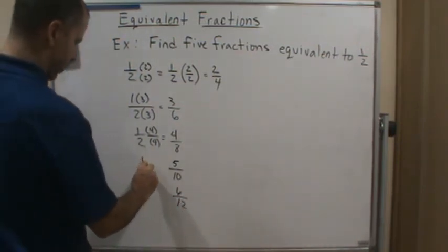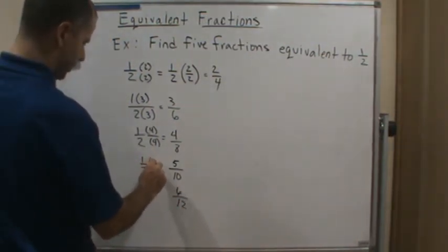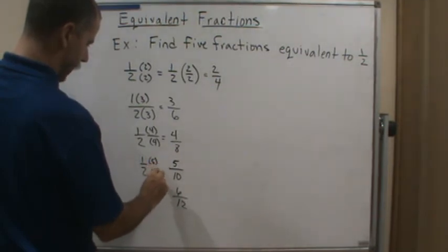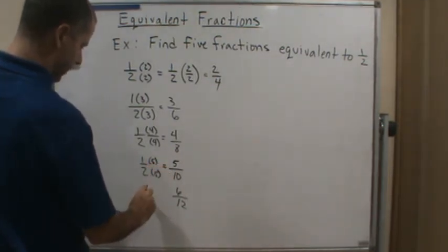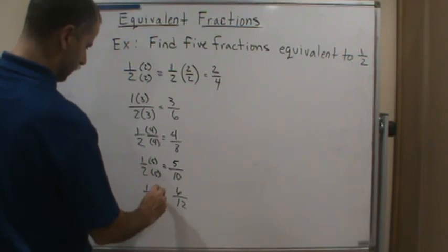So again, if I just take 1 half and multiply the top and the bottom by 5, and then I take 1 half and multiply the top and the bottom by 6.